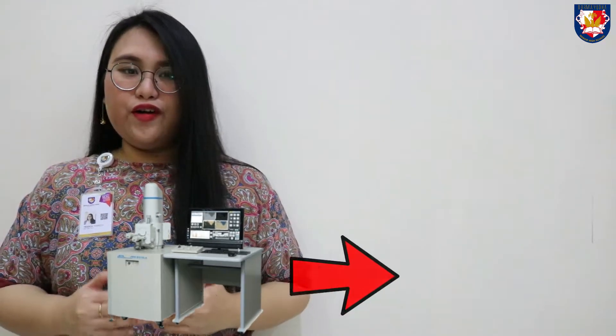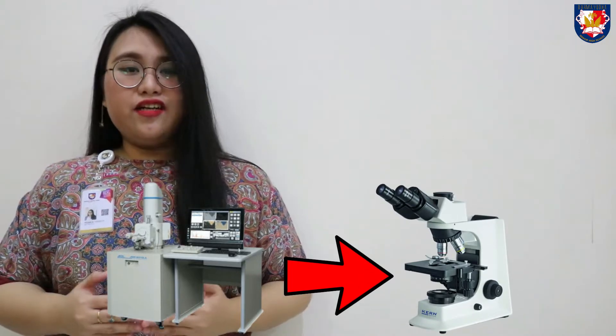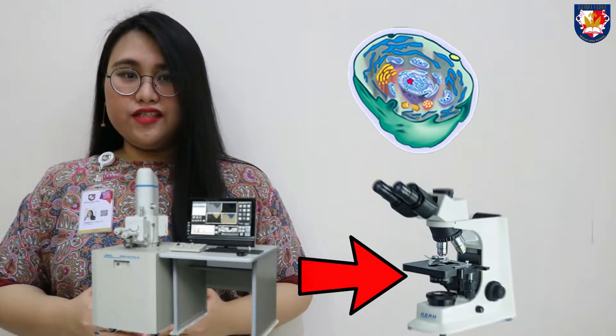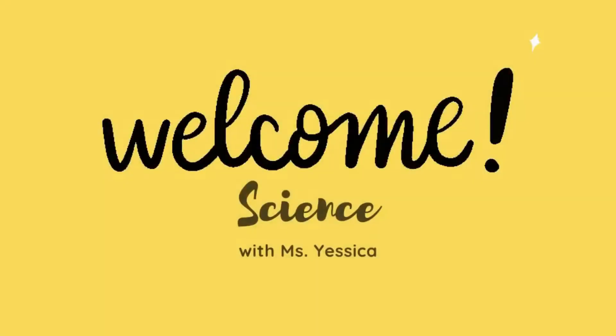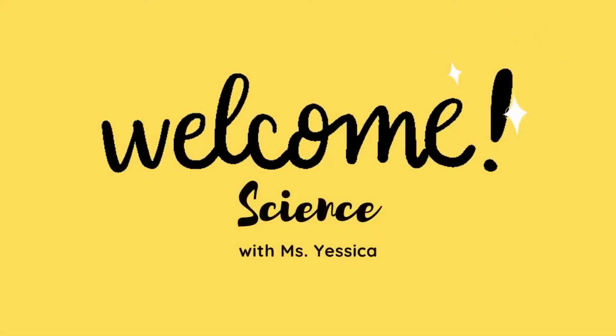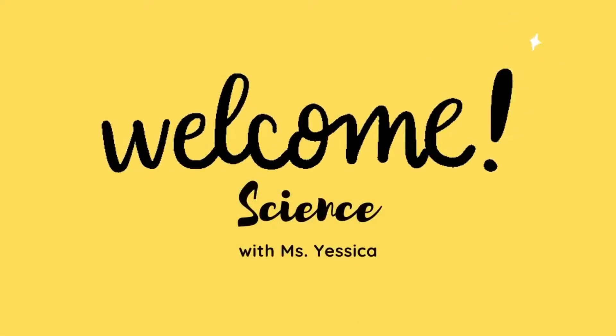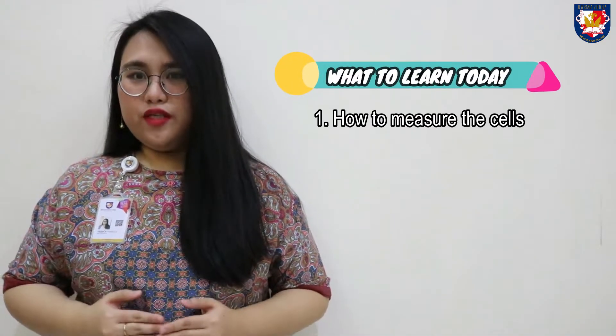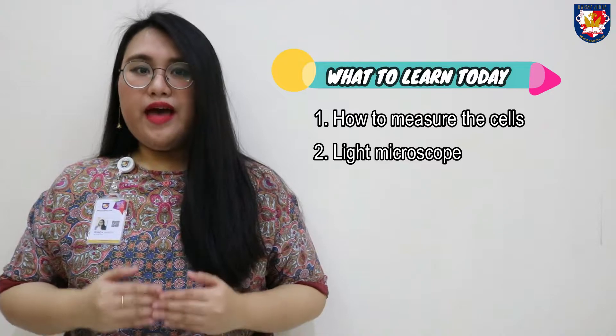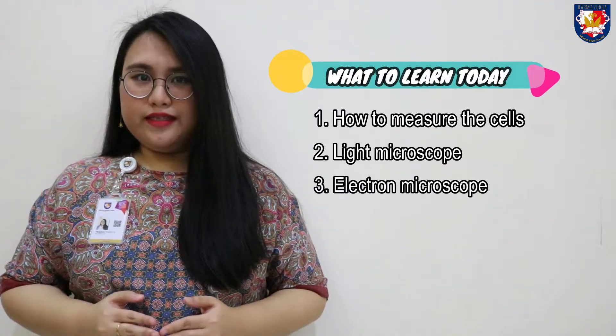Do you know why scientists usually use the electron microscope more compared to the light microscope to locate the cell structures? Let's find the answer. Today, we are going to learn about how to measure the cells, the light microscope, and the electron microscope.